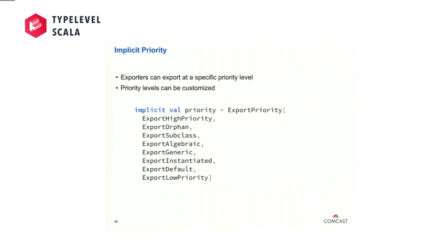The current version of Export Hook has something like eight priority levels. When we were exporting our implicit definitions, we didn't specify our priority level — it's at the default priority level. But we could have named the export level, saying that our instances are at the algebraic level. If we were using Export Hook to define those by-product instances from this morning, we would have put them at the algebraic level. And there are other options as it relates to generic-defined instances. We can even change these implicit priorities — if for some reason these eight levels don't quite work for your case, you can reorder them and define your own priority levels.